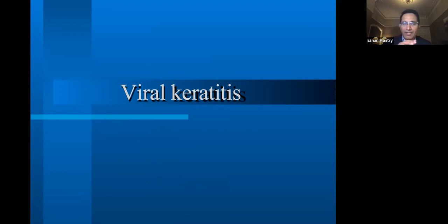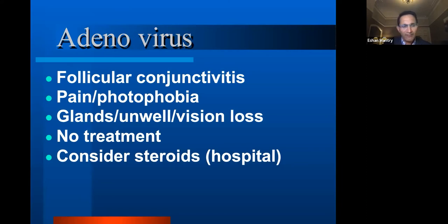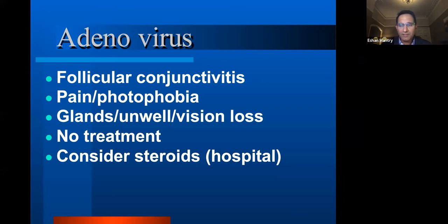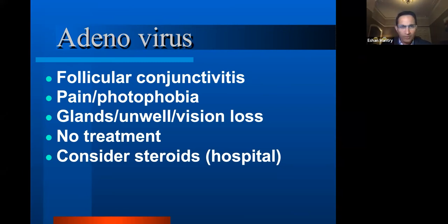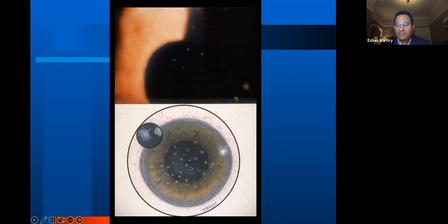Touching on viral keratitis — the common one is adenoviral keratitis, where the patient presents with follicular conjunctivitis, some lymph node enlargement, pain, and photophobia. Nine out of ten times it doesn't need treatment. If it's on the visual axis affecting visual acuity, you might consider lubrication with FML or topical steroids to help, but not otherwise. So only if it's right in the visual axis and affecting visual acuity should you consider treatment.